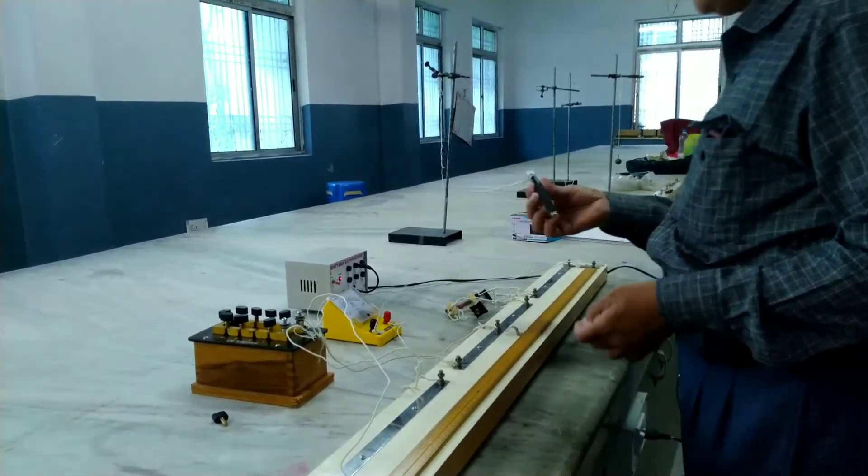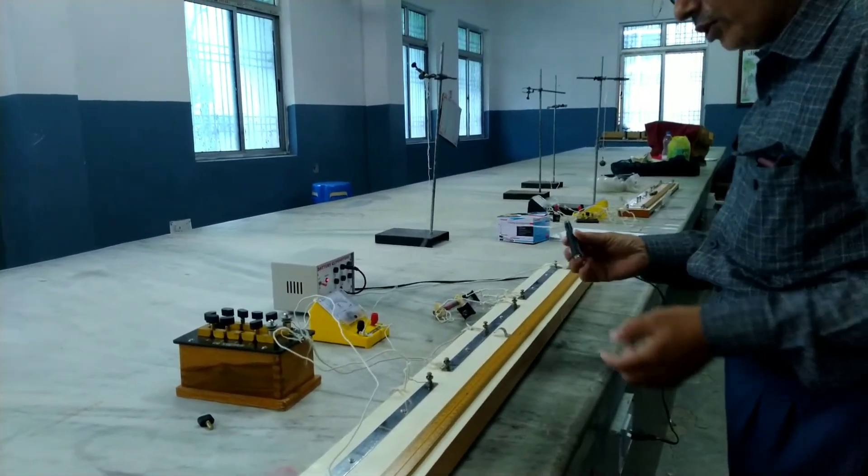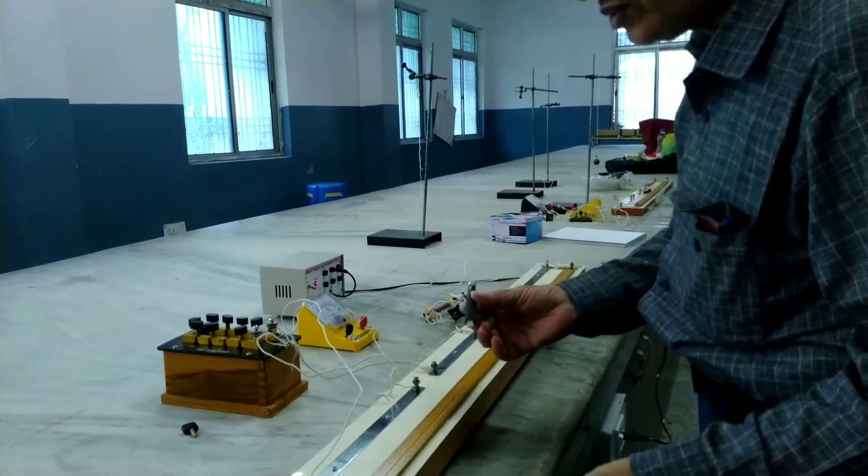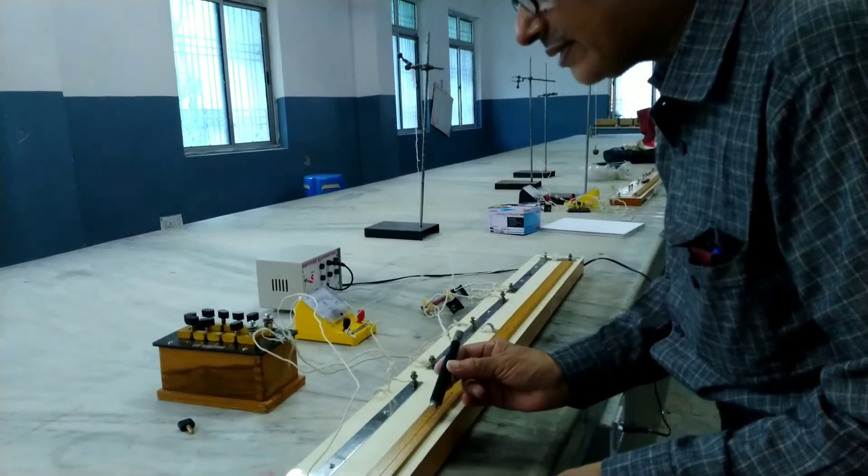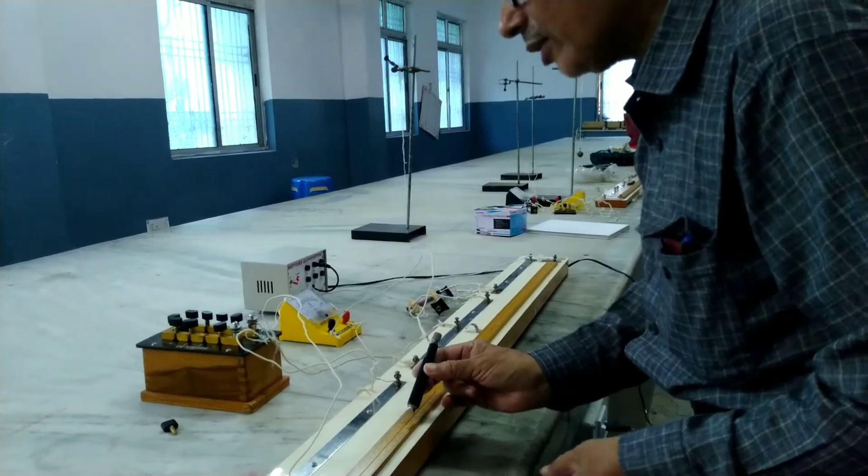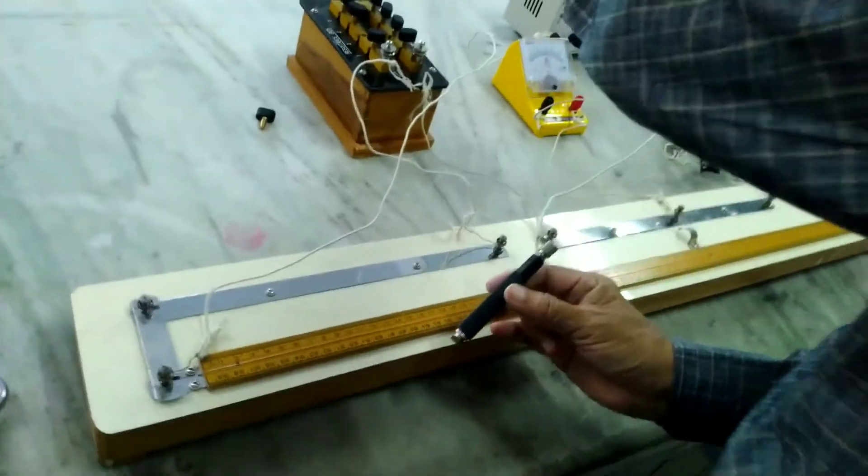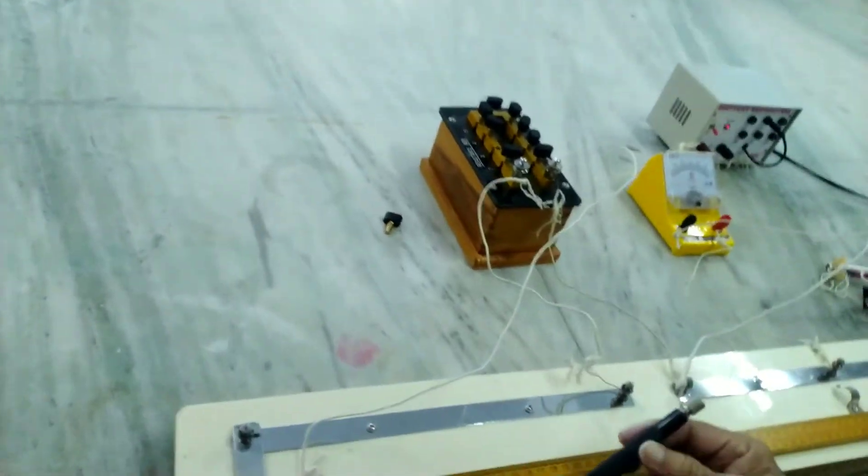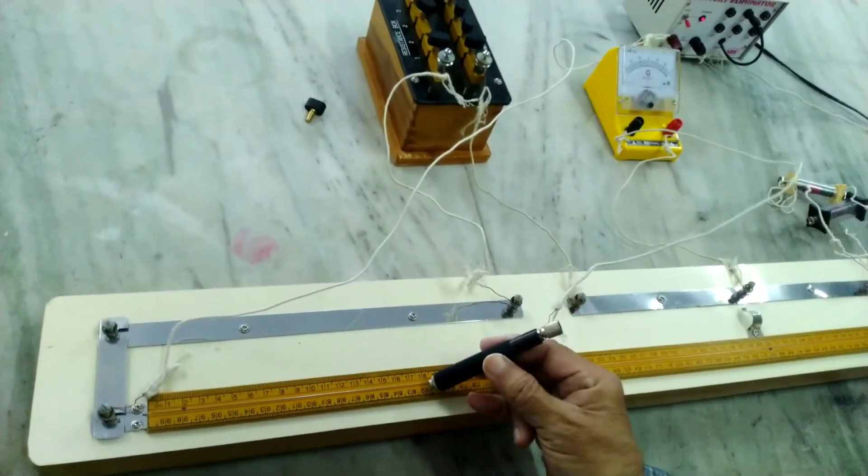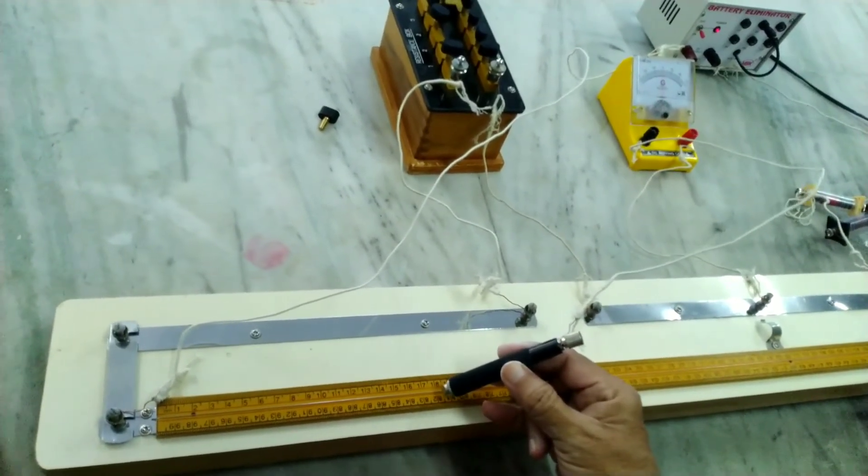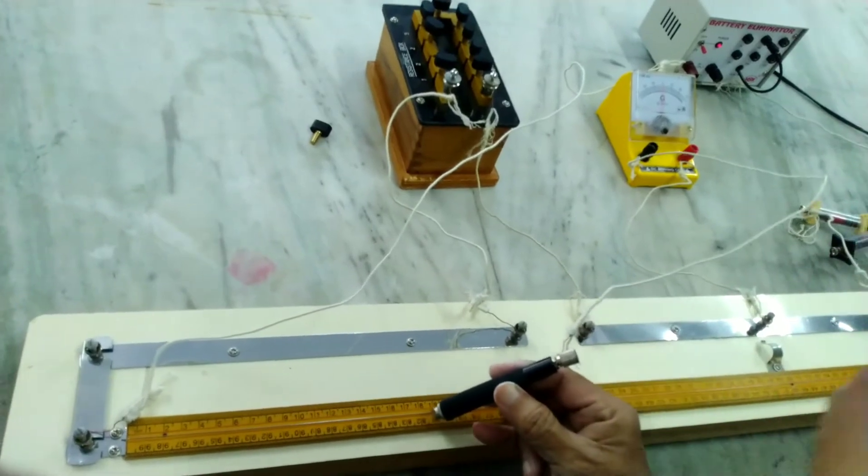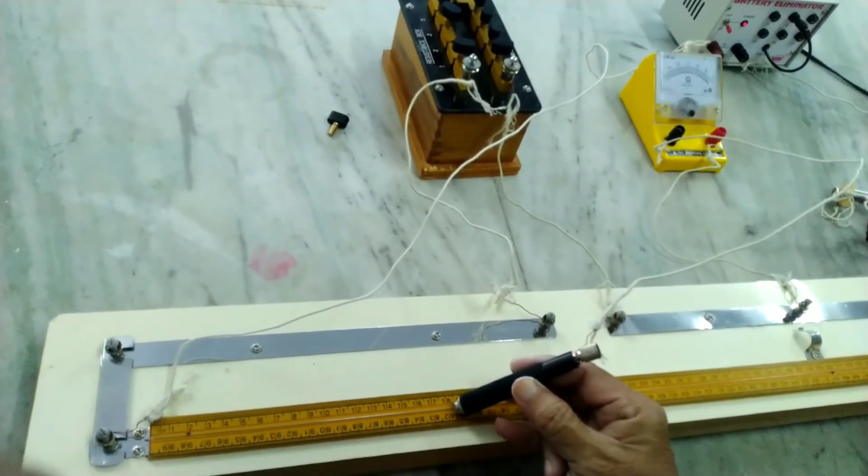Now see the deflection in the galvanometer. First, take the jockey on the left side and see the deflection in the galvanometer. It goes in one direction. The needle deflects to the left side in the galvanometer.